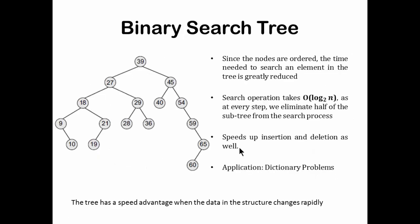Since the nodes are ordered, the time needed to search an element greatly reduces. For example, if you have to search 54 and you go to the root node, it will immediately tell that 54 is larger than 39, therefore it should be in the right subtree. You go to 45, and 45 says it is a larger value, so it should be in the right subtree. This is quite similar to the binary search from unit 2 where we had a sorted array, a midpoint, and we compared from the midpoint whether the element to be searched is on the left side or right side of the array. Every time we were dividing the search space by a factor of 2, and the similar approach is here also.